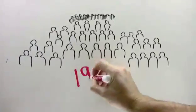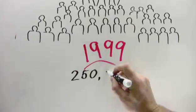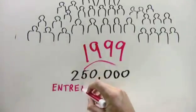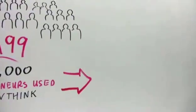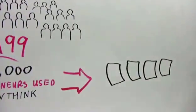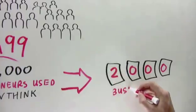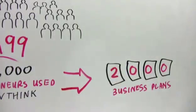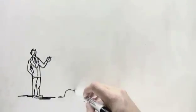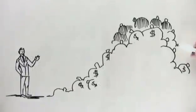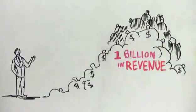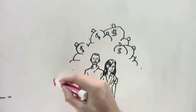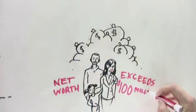Since 1999, more than 250,000 entrepreneurs have used GrowThink's training materials to start and grow their businesses. Now, we've written business plans for over 2,000 entrepreneurs, and these clients have gone on to achieve quite a bit of success. Our clients have raised over a billion dollars in capital, our clients have generated billions of dollars in revenue, and our clients have achieved massive wealth for themselves and their families. We have many clients who now have a net worth exceeding $100 million.